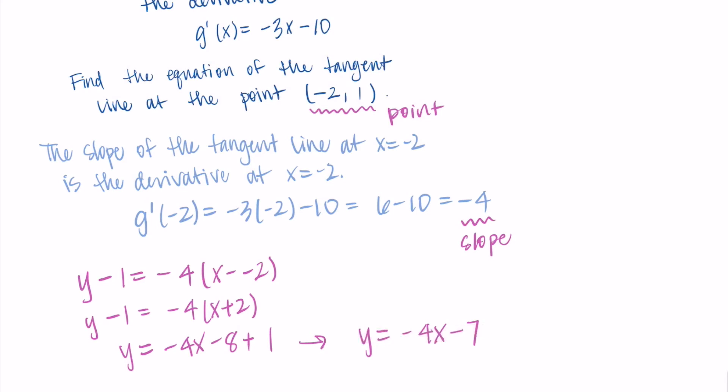All right. So we have found that the equation of the tangent line at x equals negative 2, or at that point negative 2, 1, is given by y equals minus 4 x minus 7.